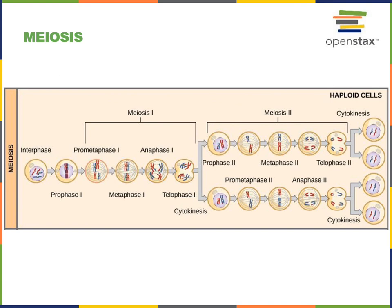Now we'll go through each of the phases again, but this is the second round of meiosis, so we'll indicate these as phase number two — such as prophase two, which is the beginning of meiosis two. Prophase two is similar to prophase one or the prophase seen during mitosis. During prophase two, the nuclear envelope breaks down and the microtubules start to grow from the centrosome to form the mitotic spindle. During prometaphase two, the mitotic spindle microtubules attach to the chromosomes. During metaphase two, the mitotic spindles pull all of the chromosomes to the midline of the cell to line up at the metaphase plate.